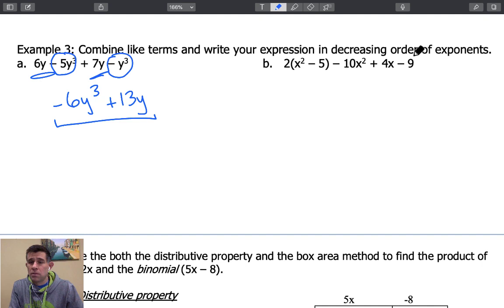Next up, we're going to now simplify this expression by using the distribution property to distribute that 2 in. So we have 2x squared minus 10 minus 10x squared plus 4x minus 9.